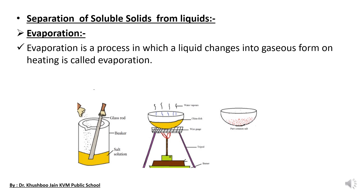We take a beaker and add a water solution, then add a small amount of salt. After stirring we get a clear solution of salt water. We then heat that beaker, and after some time all the water changes its phase — from liquid phase it changes into gaseous form — and this process is known as evaporation. After evaporating all the water, we will get the salt again in the beaker in solid form. We scratch that solid and collect it into another beaker. This process is known as evaporation.